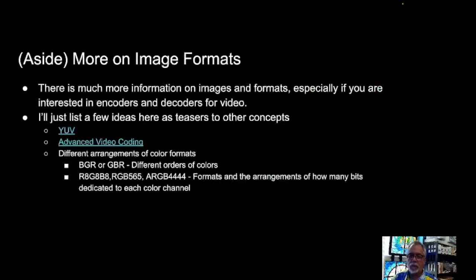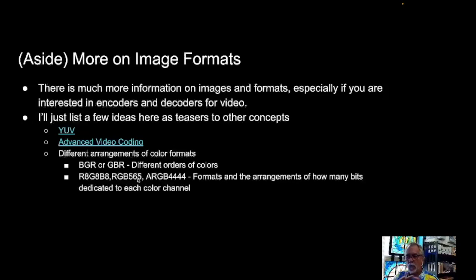There's a lot of information on images, formats, decoders, and video. There are different arrangements of color formats. For example, RGB565 means every piece of color is stored as RGB with five bits for red, six for green, and five for blue. It turns out that our eyes are a lot more sensitive to green because we live in a green world — we evolved to have eyes that are a little bit more sensitive there. So adding a little bit of extra information to green makes sense. But for this course we're going to basically be using 8 bits for R, 8 bits for green, and 8 bits for blue.